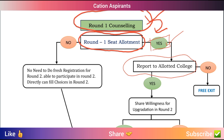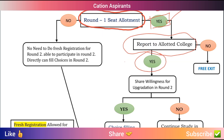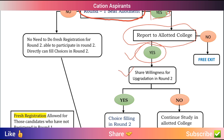After reporting with original documents, if you are allocated a seat and wish to participate in Round 2 counseling, you submit to the college. If you want to participate in Round 2 counseling, you can do so from that college. You can upgrade your seat through the subsequent round.